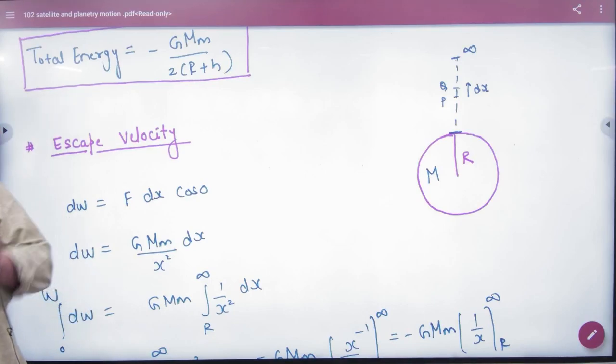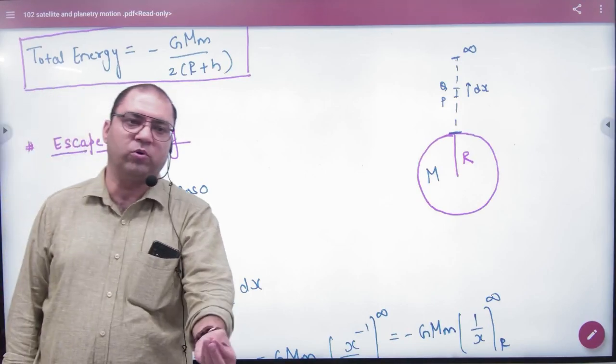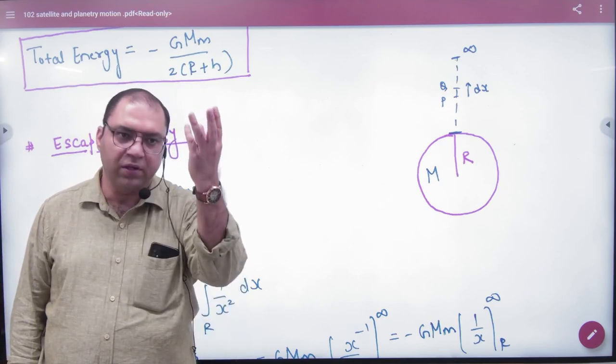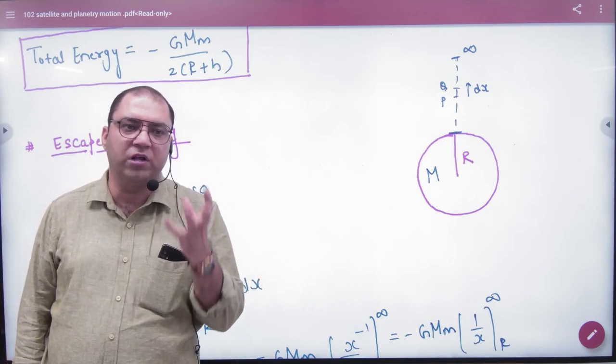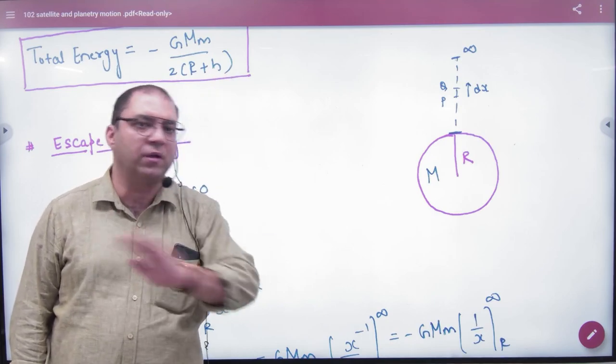Escape velocity means a kind of velocity that you put an object here and put it on top so that object will cross the gravitational pull and never come back.